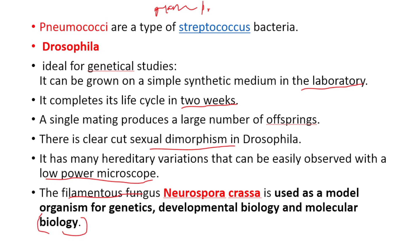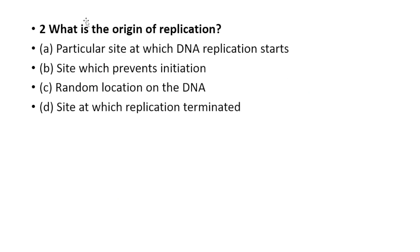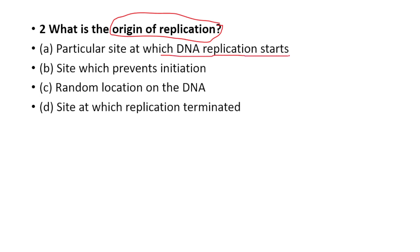What is the origin of replication? Option A: particular site at which DNA replication starts. Option B: site which prevents initiation. Option C: random location on the DNA. Option D: site at which replication terminates. The answer is Option A — the origin of replication is the particular site at which DNA replication starts.